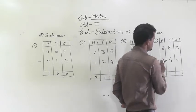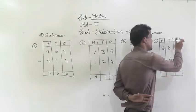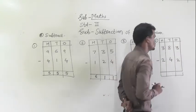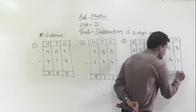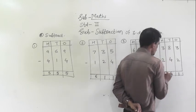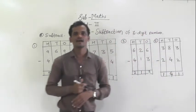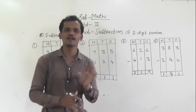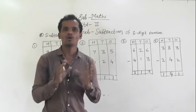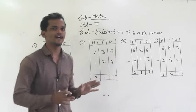Next example: 383 minus 242. Subtract the values, start from the 1's place. 3 minus 2 is 1, 8 minus 4 is 4, and 3 minus 2 is 1. So 141 is the answer. Like this you have to solve — it is very simple. We have learned how to subtract 2-digit numbers without borrowing, and the same way applies here. Just subtract the values and start from the ones place.